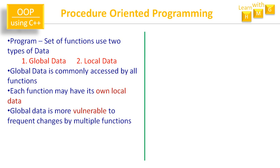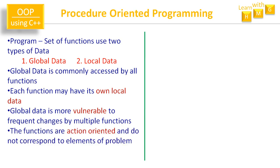Global data is more vulnerable to frequent changes by multiple functions. Since global data is commonly accessed, multiple functions operate on it, each performing certain operations on that data, causing values to change continuously. This frequent-change characteristic is the vulnerability of global data.